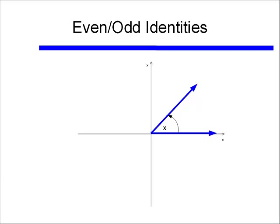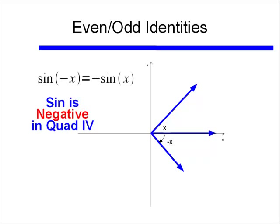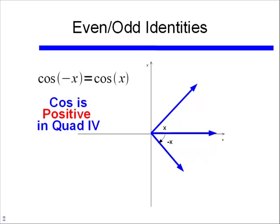Finally, let's talk about the even and odd identities. Remember when we put angles in standard position — a positive rotation goes counterclockwise, while the same angle rotated clockwise is a negative angle. Sine is negative in quadrant 4, so sine of negative X equals negative sine X. Cosine however is positive in quadrant 4, so cosine of negative X equals positive cosine X.